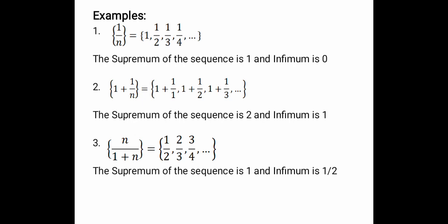Hence the supremum of the sequence is 2 and the infimum is 1. Any number less than 2, such as 1.5, cannot be taken as the upper bound m, because then the sequence would not be bounded above by that value. The only upper bound is 2 and the lower bound is 1.